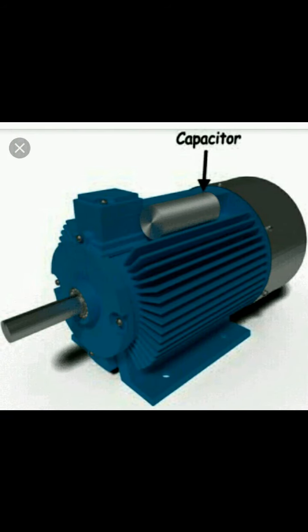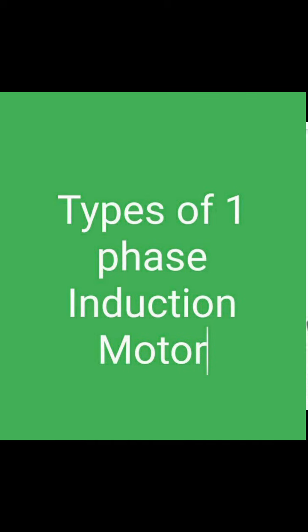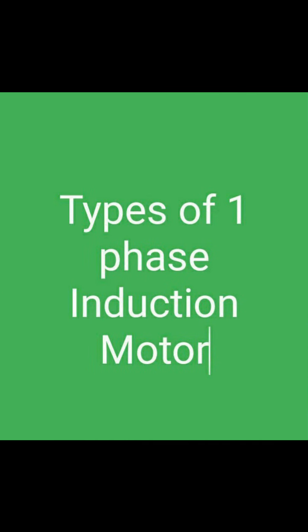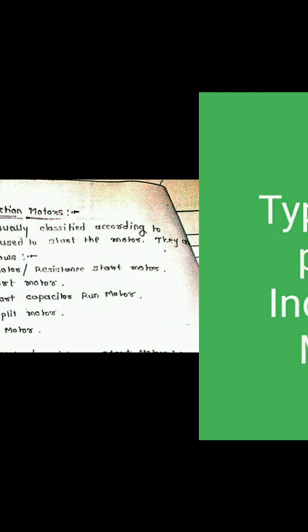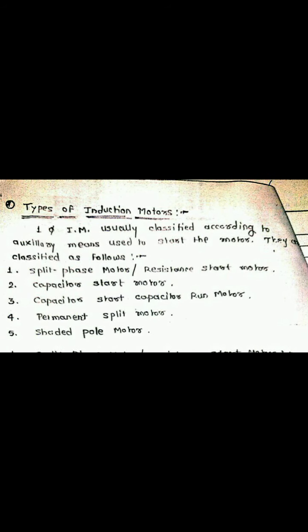Today we are dealing with a type of single-phase induction motor called the capacitor start capacitor run induction motor. There are different types of single-phase induction motors, and according to the connection of the auxiliary winding, they are classified as: resistor start motor (split phase induction motor), capacitor start motor, capacitor start capacitor run motor, permanent split motor, and shaded pole motor.